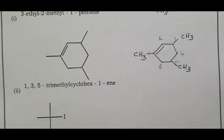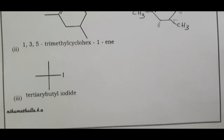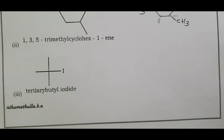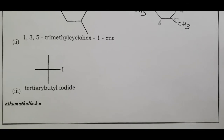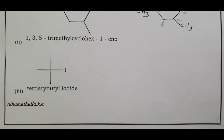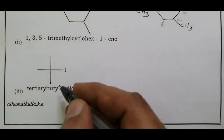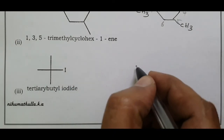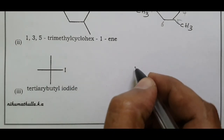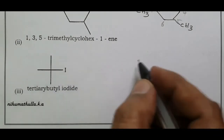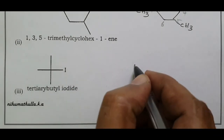The position of the double bond is at carbon one. This is the common name. For the IUPAC name, we consider a four-carbon structure — the tertiary butyl structure.